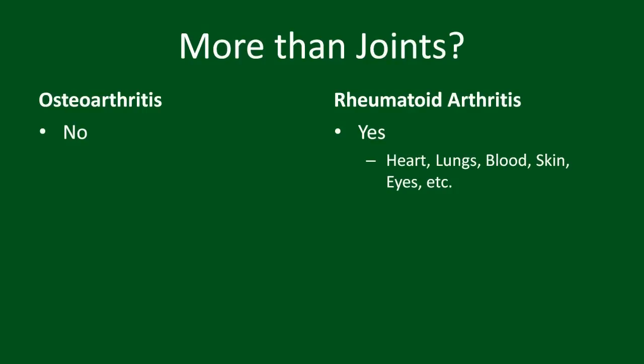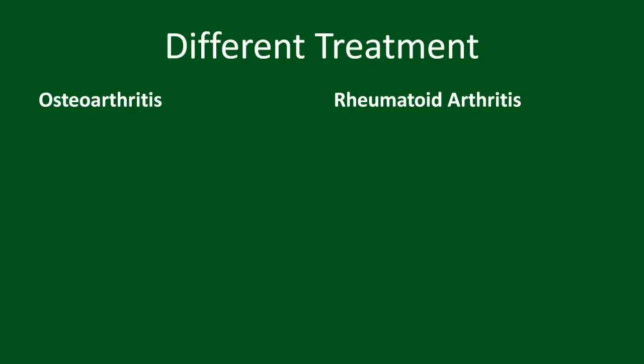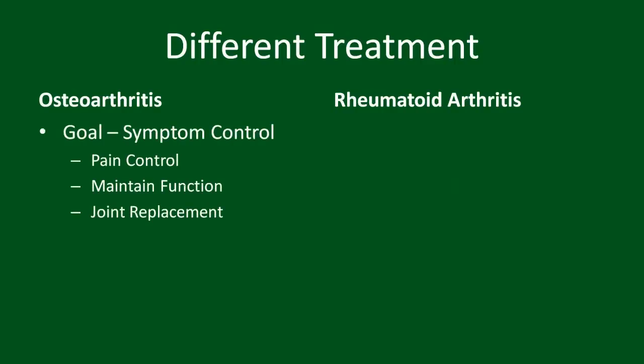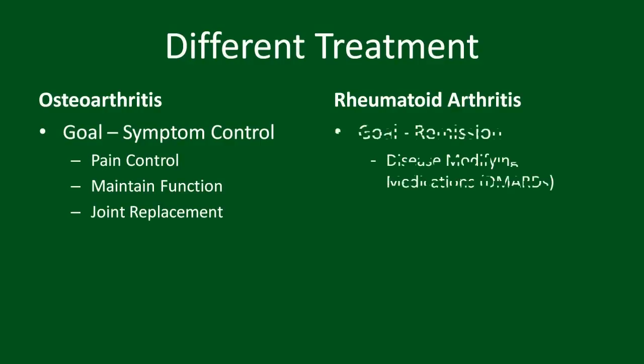Because of their differences, the treatment options are also very different. Management of osteoarthritis involves control of pain and maintaining function. The goal of treatment of rheumatoid arthritis is remission, using specialized medications called DMARDs.